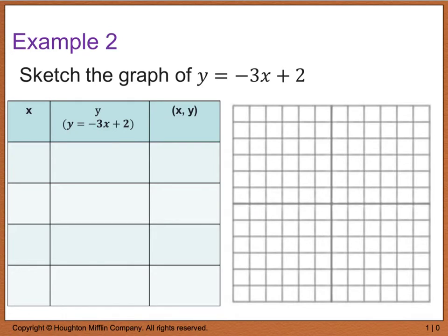In example 2, we're going to sketch the graph of y equals negative 3x plus 2. The equation has already isolated y for us, so no further modifications are needed. I created a table with a column for x values. We'll plug each x value into the equation to solve for y, giving us our coordinate points to plot on the graph. Please use graph paper when doing your homework.